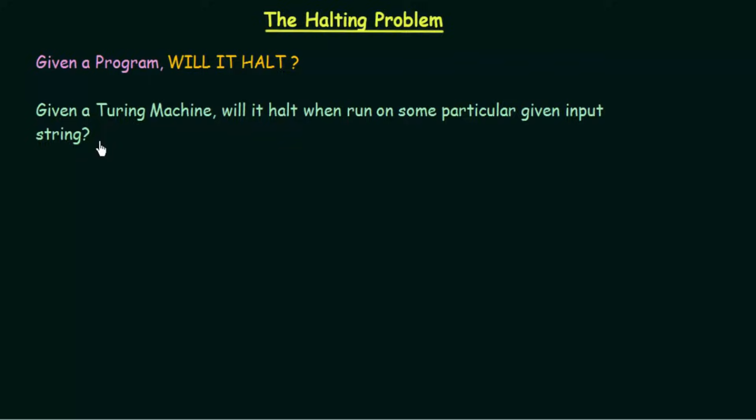If you think of any particular problem, by looking at the Turing machine or the program and the particular input given, you can say whether it will halt or not. But in a generalized way, we cannot design a Turing machine or algorithm which will take any program and tell us whether that program will halt or not. The answer is no — we cannot design it, and it is only possible to run the program and see for ourselves.